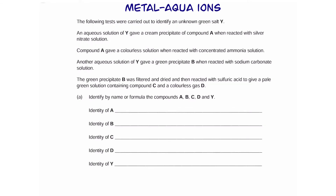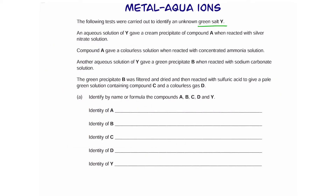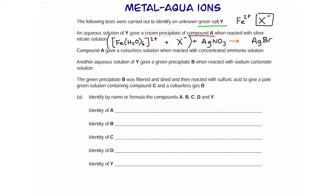The following tests were carried out to identify an unknown green salt Y. Looking at our table, green appears frequently for iron(II). So this green salt has iron(II) bonded to a negative ion. When dissolved in water, the iron forms a hexa-aqua ion and the negative part is released. This solution of Y reacts with silver nitrate and forms a cream precipitate — silver ions form a cream precipitate only with bromide ions, forming AgBr.